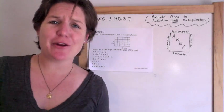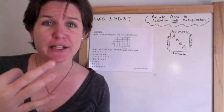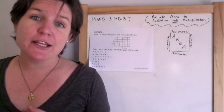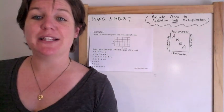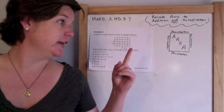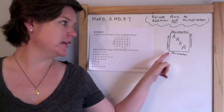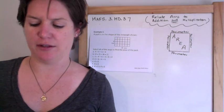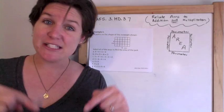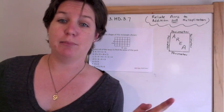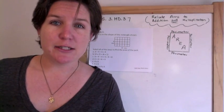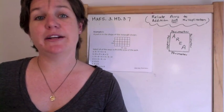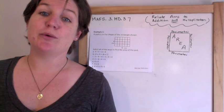Welcome back to another edition of how to pass the math FSA grade 3. Today we'll be working on MAFS.3.MD.3.7, which in human language is relating area to addition and multiplication. I have my little visual up here to remind you that perimeter is finding the border and area is determining what is being covered. In the last video I taught you that area is counting the squares.